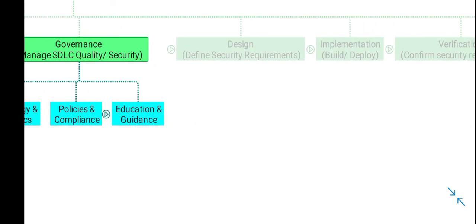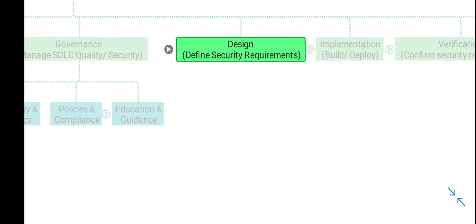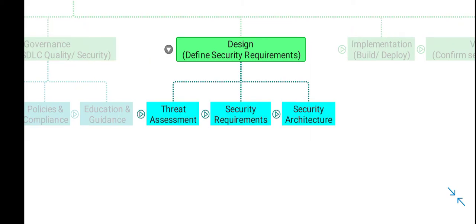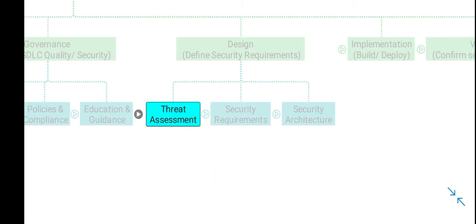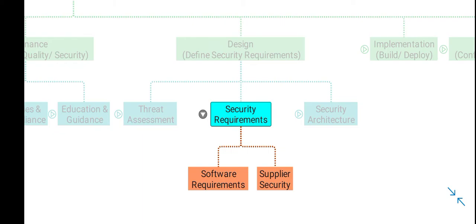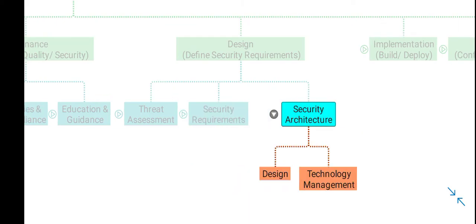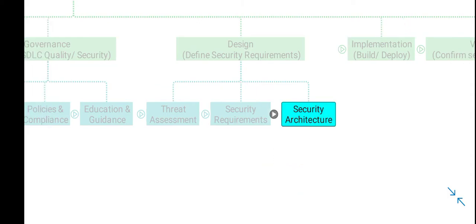The next business function is Design, and its purpose is to define, develop, and architect security requirements in the software development lifecycle. You perform threat assessment to identify the application risk profile, conduct threat modeling, define the security requirements of software including requirements with regards to a software supplier, and then architect the security design and technology management with regards to the security of the application you are developing.